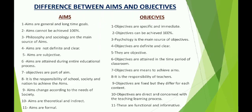Now let us study the differences between aims and objectives. The aims are general and long-term goals while the objectives are specific and immediate. The aims cannot be achieved 100% while the objectives can be achieved 100%. The aims are subjective in nature while the objectives are objective in nature. Aims are attained during the entire educational process while the objectives are attained in the time period of the classroom.